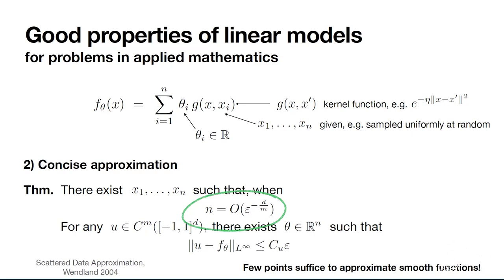This opens very important applications. If you are working with a very regular function — large m — you can avoid the curse of dimensionality. If m is larger than d, a number of units in the order of epsilon to the minus one suffices. If you want to double precision, you only double the number of points — it doesn't grow exponentially. This is why kernel methods or shallow neural networks work in problems with dimensions in the order of thousands.